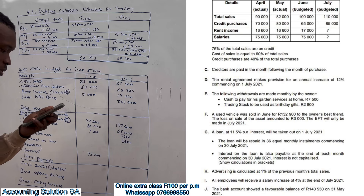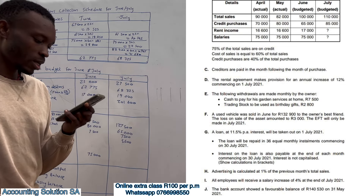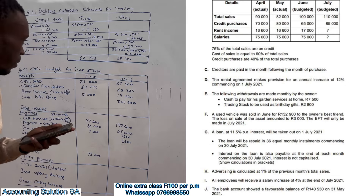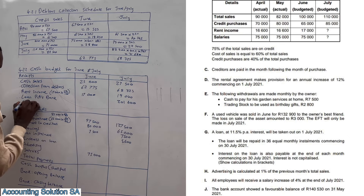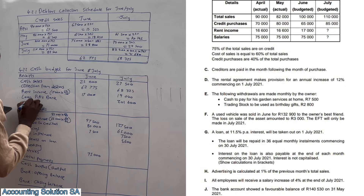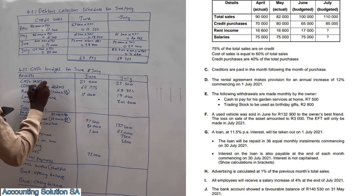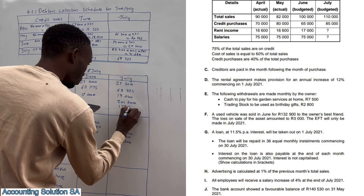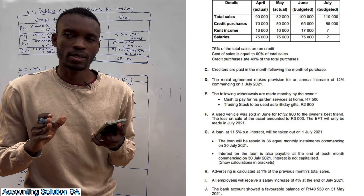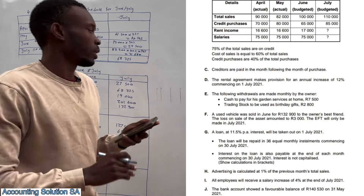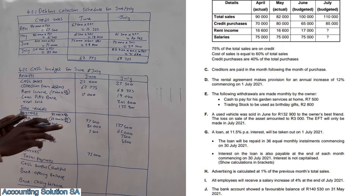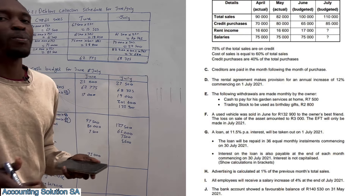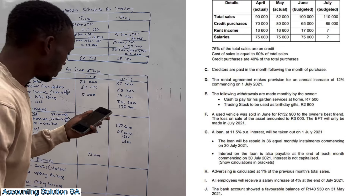A used vehicle was sold in June for 132,900 to the owner's best friend, and the loss on sale is 3,000. The EFT will only be received in July. When we sell, we receive cash — so we record 132,900 received in July. The loss is not recorded because a loss is just the difference between the selling price and current value — no cash is received or paid, similar to depreciation.